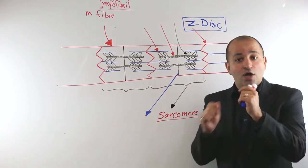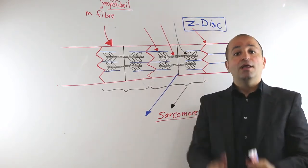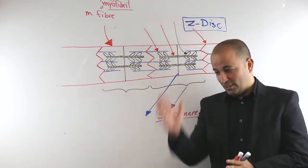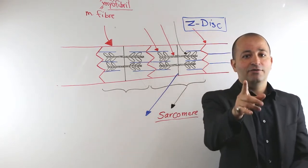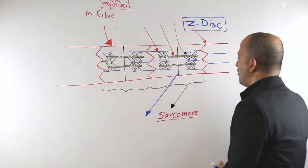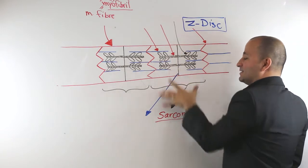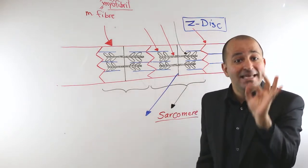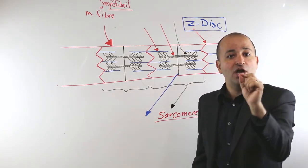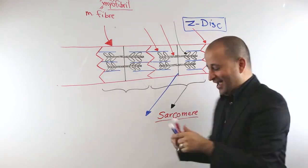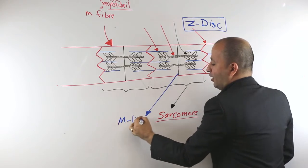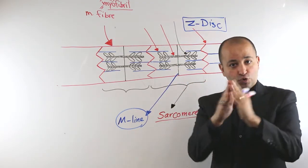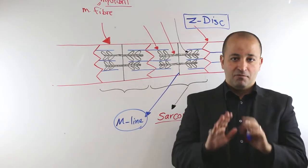This is one of the common exam questions: what is the definition of sarcomere? Number one, it's a unit of muscle fiber. Number two, it goes from one Z disc to the next Z disc. When you look exactly at the center of the sarcomere, you will see another line there. That line in the middle of the sarcomere is called the M line, and it divides one sarcomere into two sections.